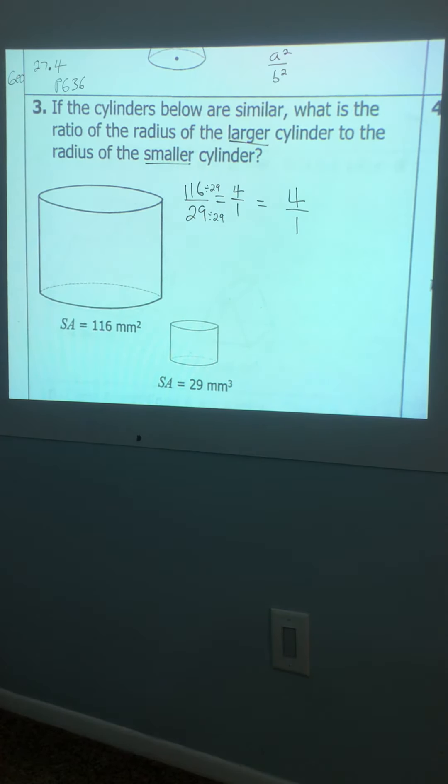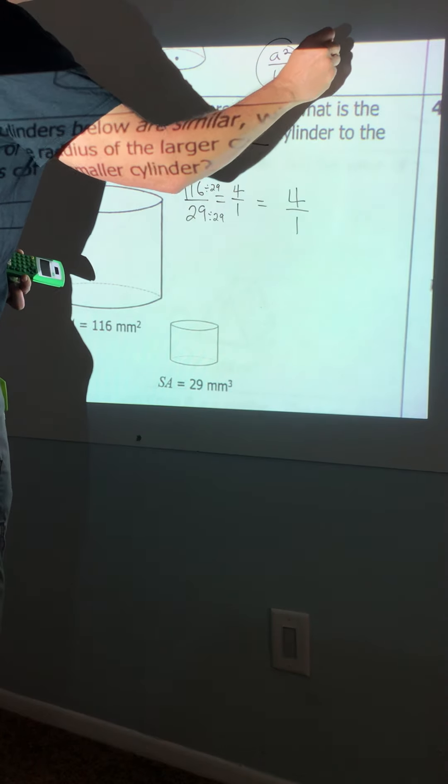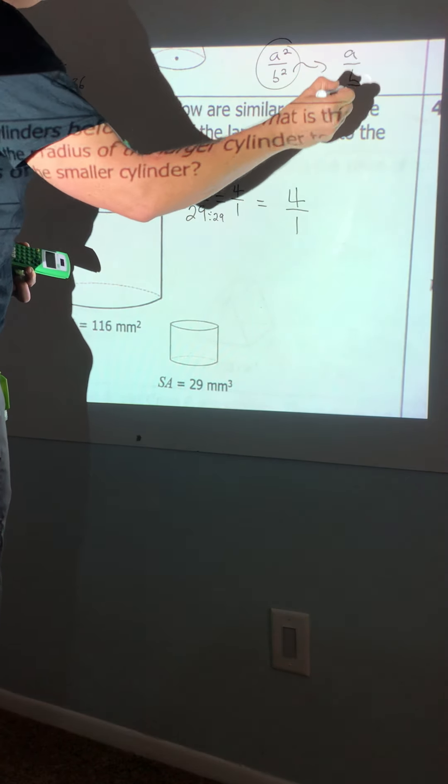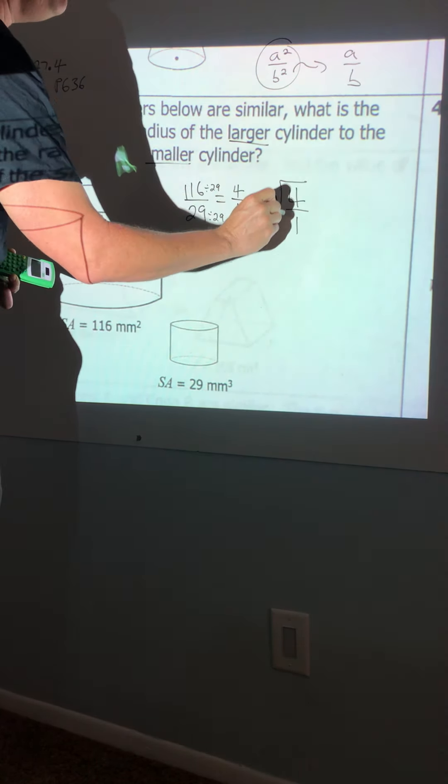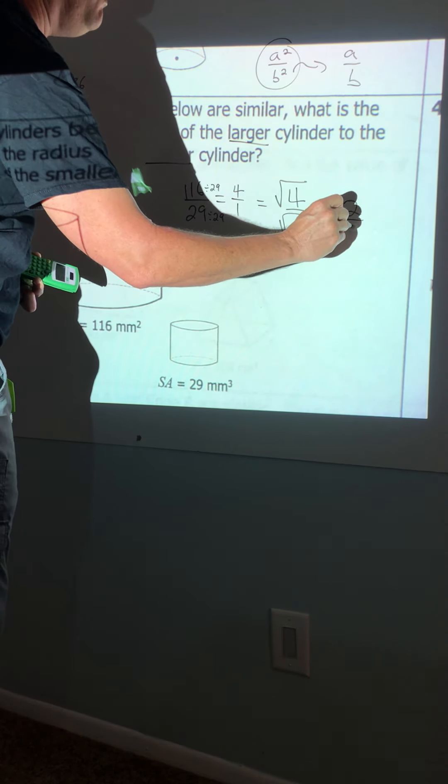So if I want to find parts on the shape, because they want the radius, I'm going to have to undo this square edge so I can get a to b. So you're just going to square root the four, square root the one, and you're going to get two to one.